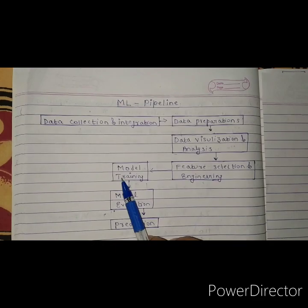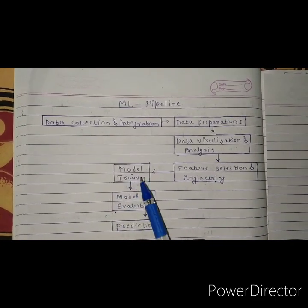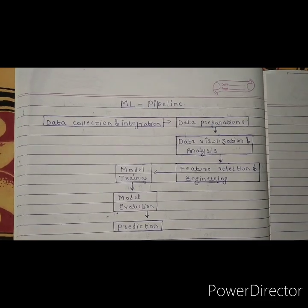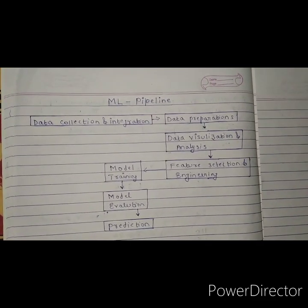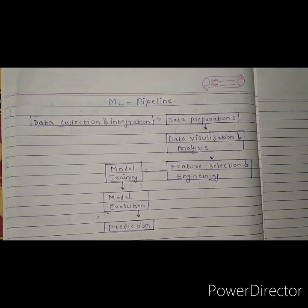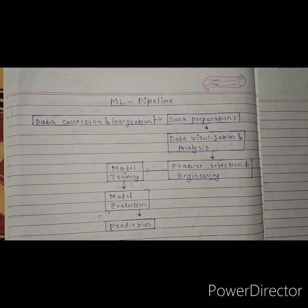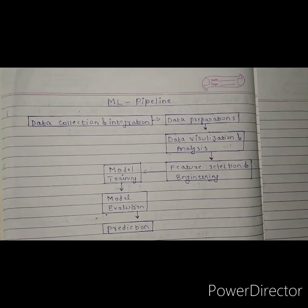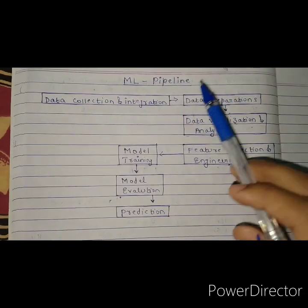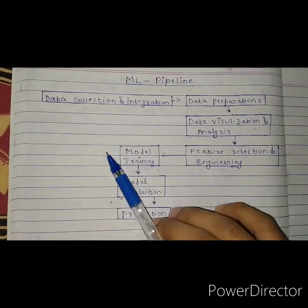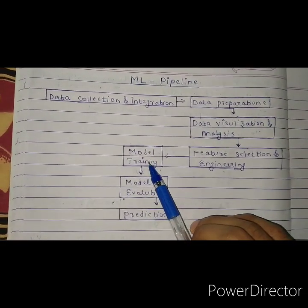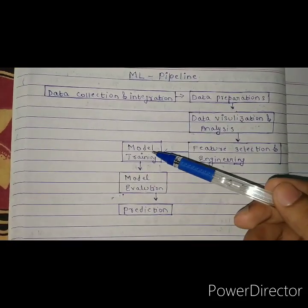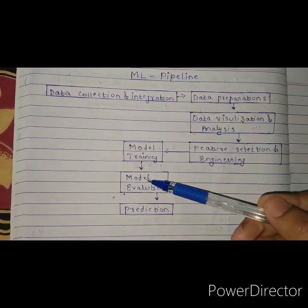जब आपको लगे कि error बहुत minimum है तो आप अगले step पर आ सकते हैं — that is the fifth step, model training। आपको model को train करना है। आपने जो problem frame किया है, data के हिसाब से जो solution बनाया है, उसे train करें और output को detail में analyze करते जाएं।